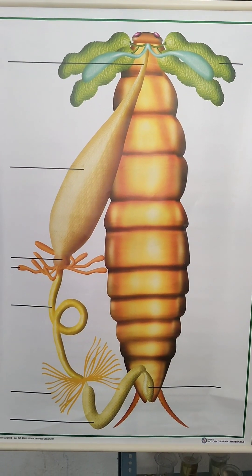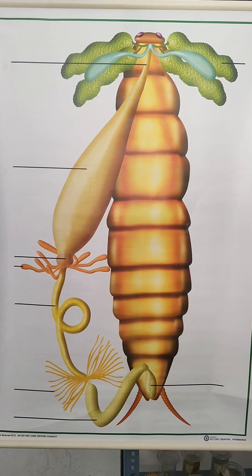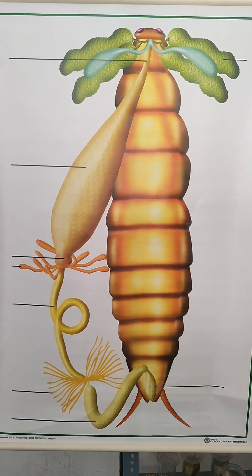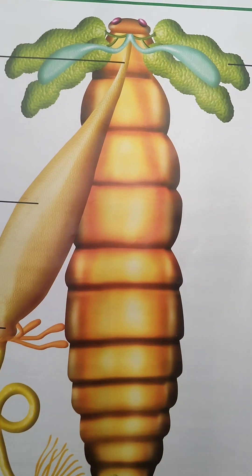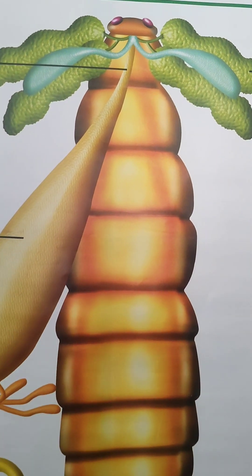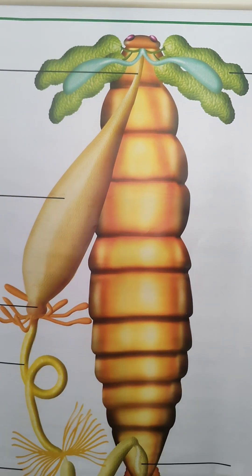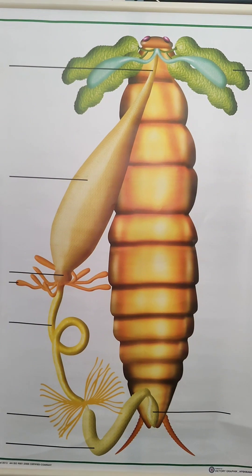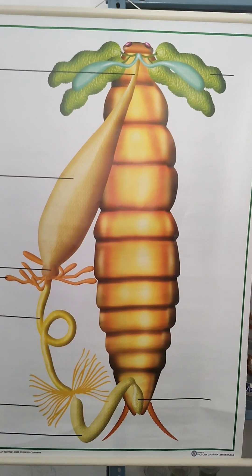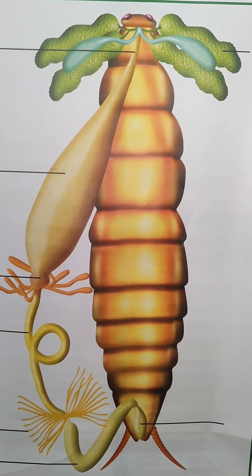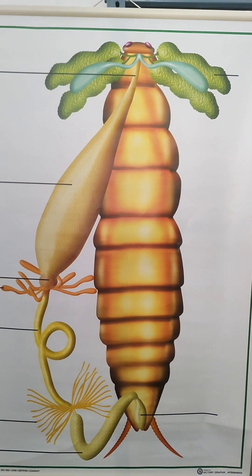Then, cockroach digestive system. Already in the first year you have written the long question. The parts include foregut, midgut, hindgut, Malpighian tube, salivary ducts, salivary gland, hepatic caeca, and rectum. You have to label at least 2 to 4 of these parts.